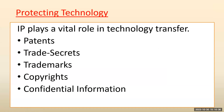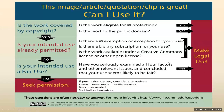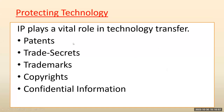Regarding protecting technology — in the earlier slide we were talking about legal usage, so we have to have certain licenses. When we talk about license, we are going to think about creative common license. IP plays a vital role — what is IP? Intellectual property plays a vital role in technology transfer. Intellectual property involves patents, trade secrets, trademarks, copyrights, and confidential information.